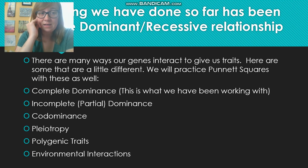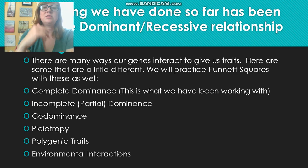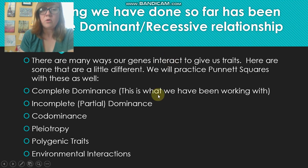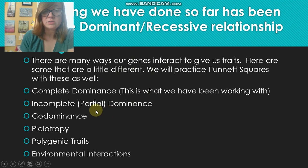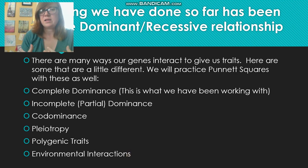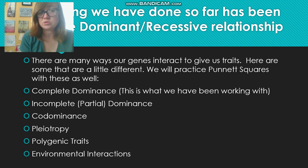Today I want to go over some of the ways our genes interact to express our traits. One is complete dominance, which you've probably been working with your whole life. Another is called incomplete or partial dominance. We also have co-dominance, pleiotropy, polygenic traits, and environmental interactions — meaning there are ways our environment influences how our body expresses our traits.